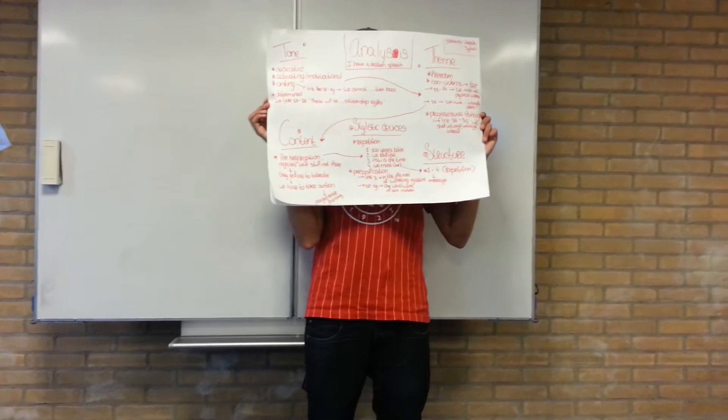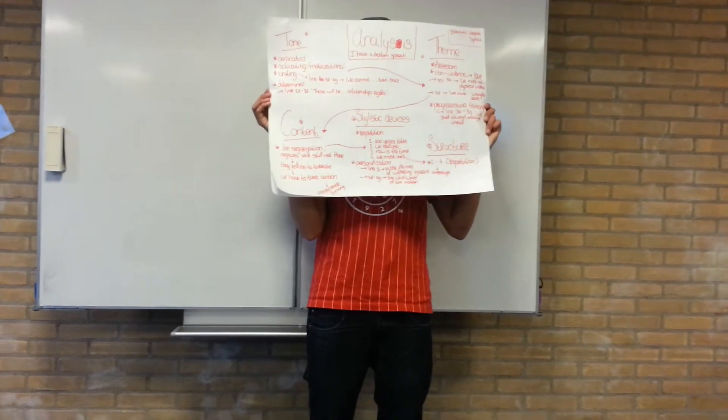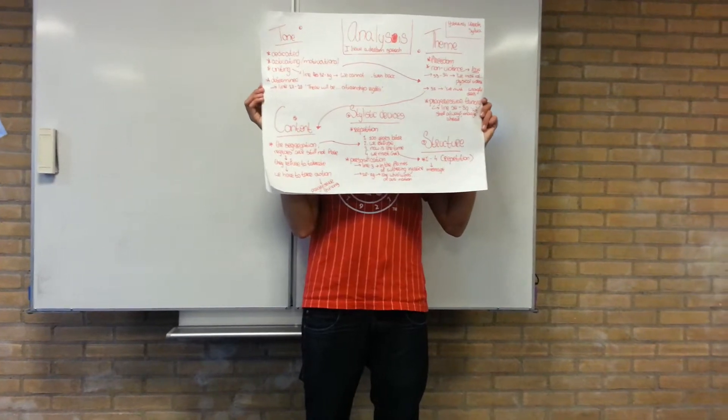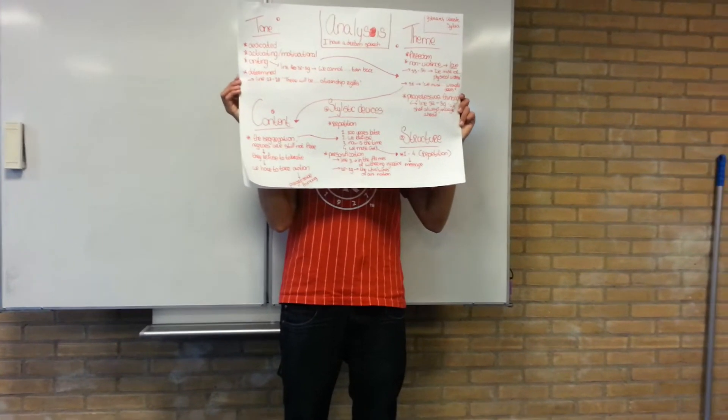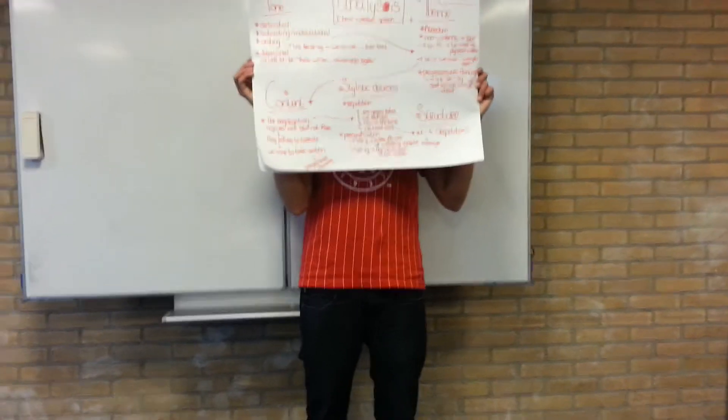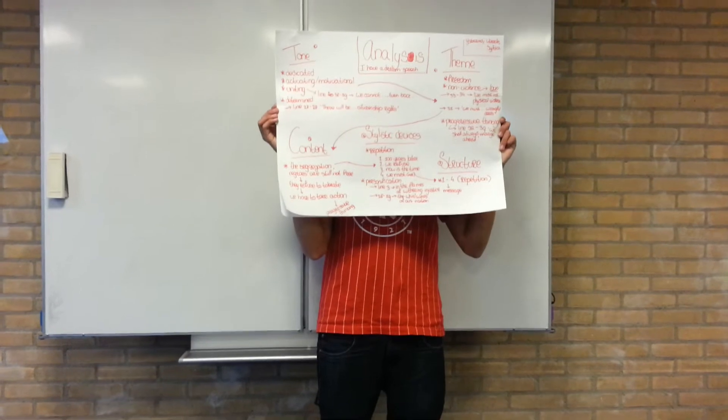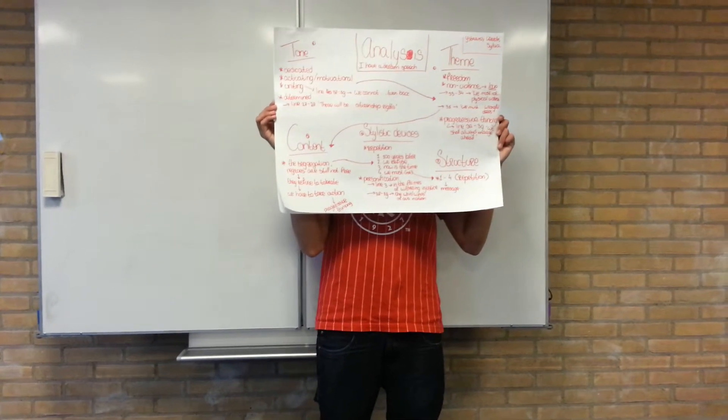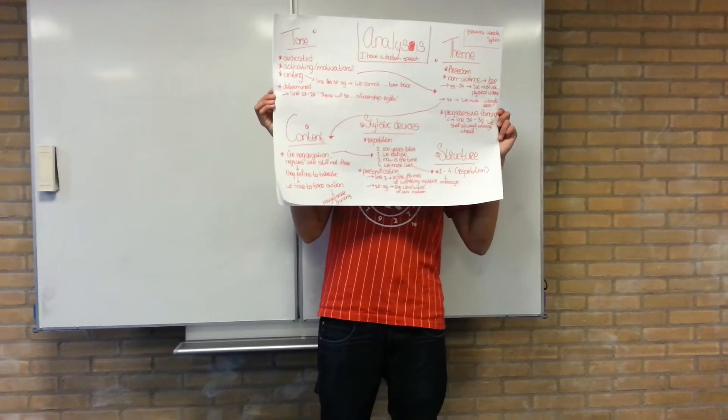There are a couple of personifications in this extract, for example in line 3. He says in the flames of withering injustice. Then there is another personification in line 28 and 29, in the whirlwinds of our nation.